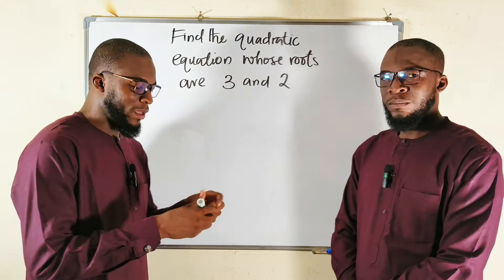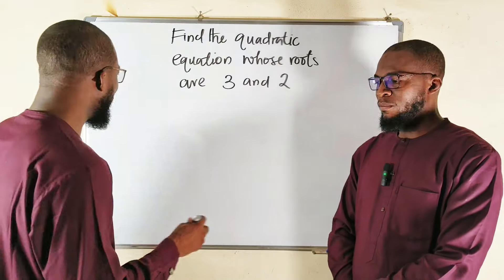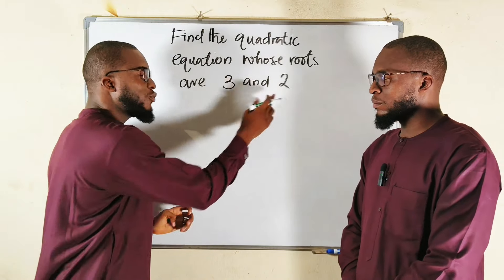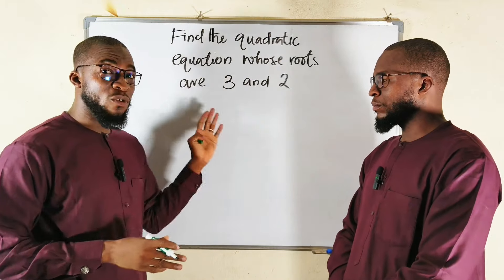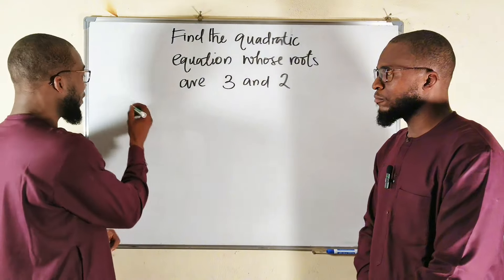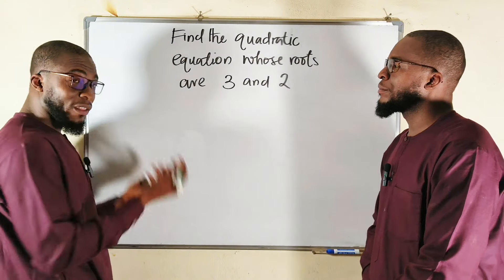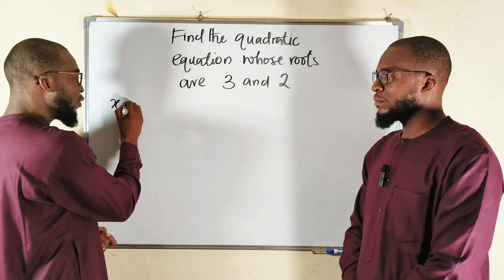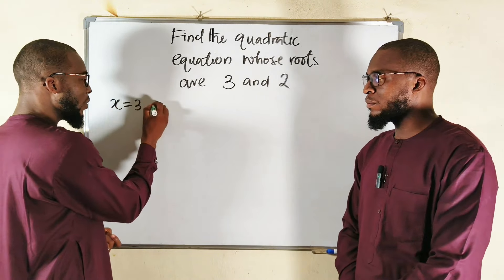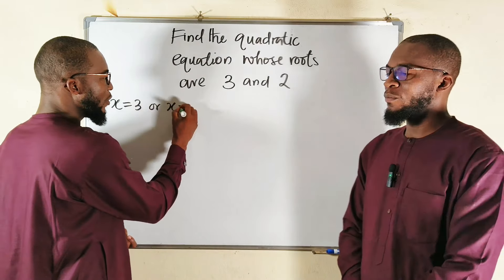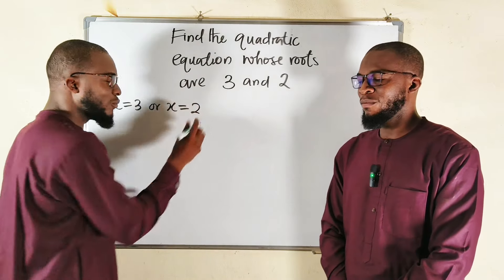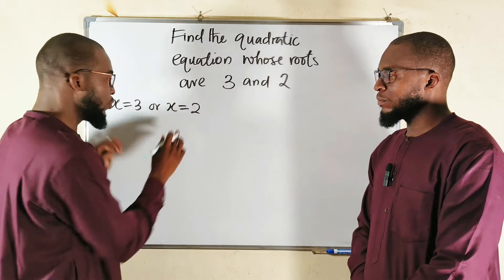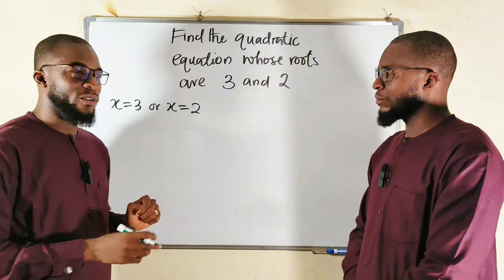For me, this is how I'm going to solve the problem. If 3 and 2 are the roots of this quadratic equation, it implies that after the solution, you will obtain x equal to 3 or x equal to positive 2, right?